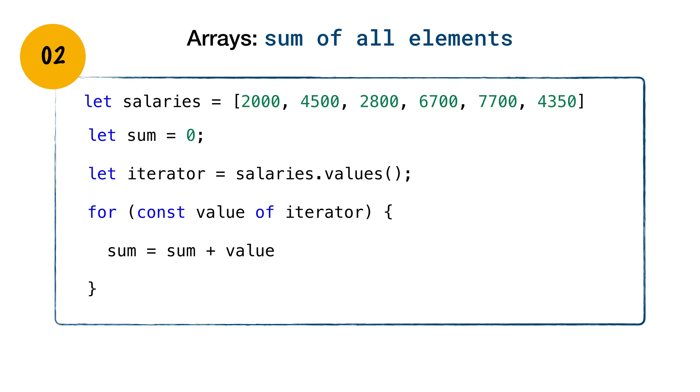JavaScript provides a for of statement to loop over iterable objects such as arrays. Again, sum variable keeps accumulating the sum of every value that finally sums up to 28,050. This is the second way of summing up all the elements in the array.